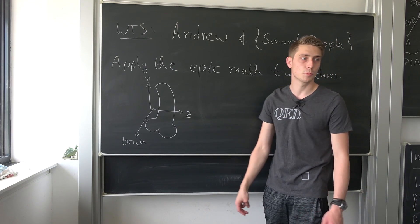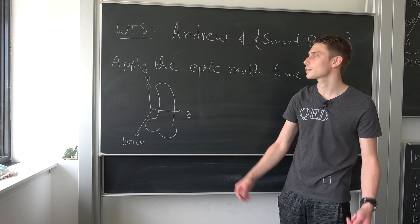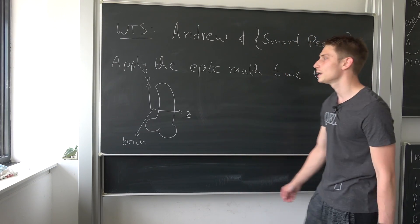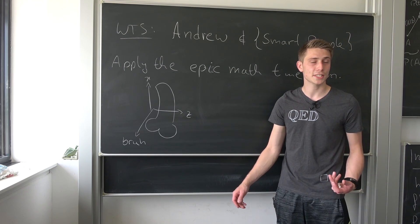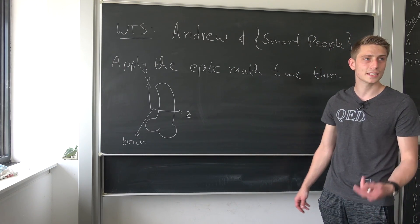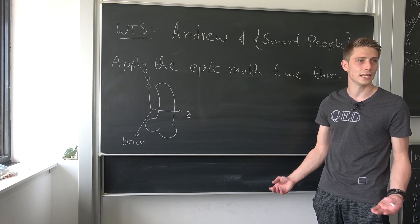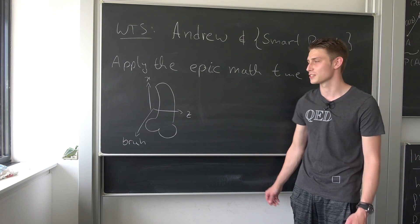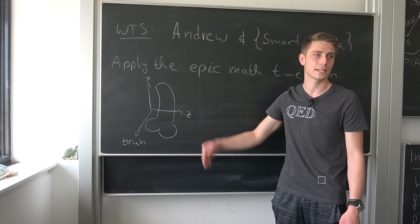Guys, this proof is going nowhere. Where should we even start? I mean, we tried applying the epic math time theorem, but we can't show that Andrew is not element of the smart people. I really don't know where to start. We even applied the big donger theorem down here. Should we just call it quits?